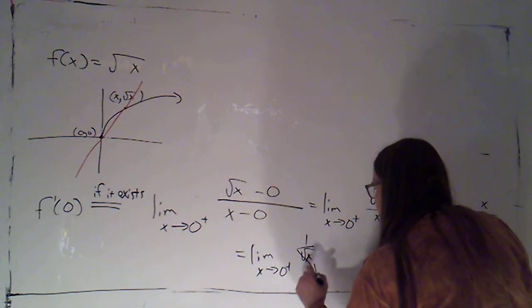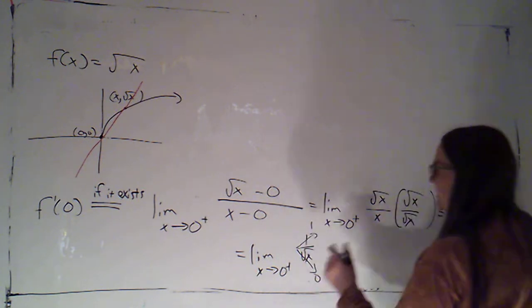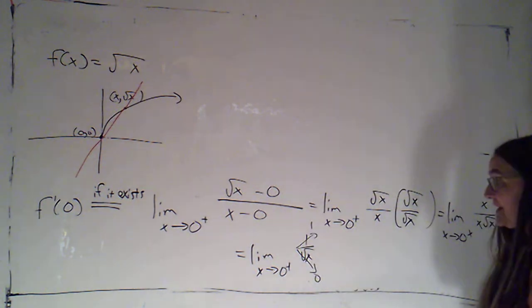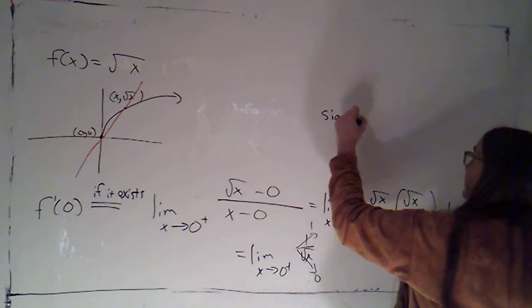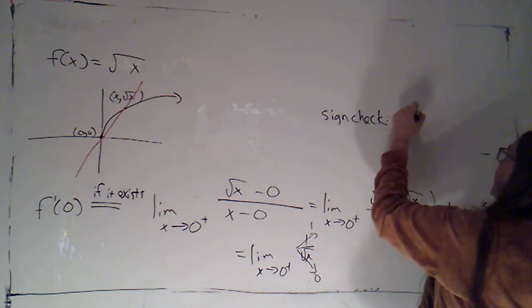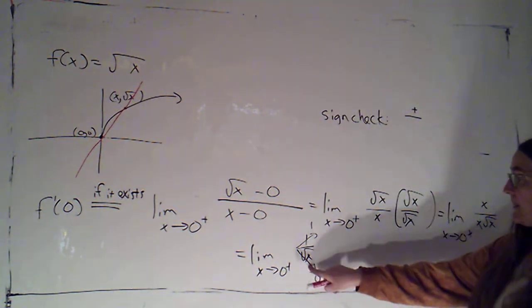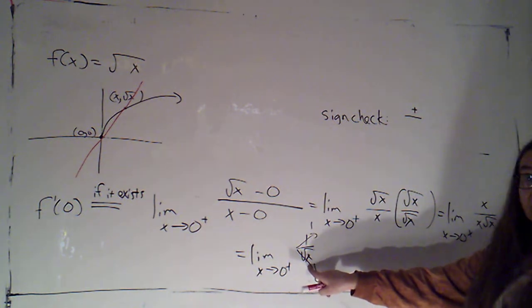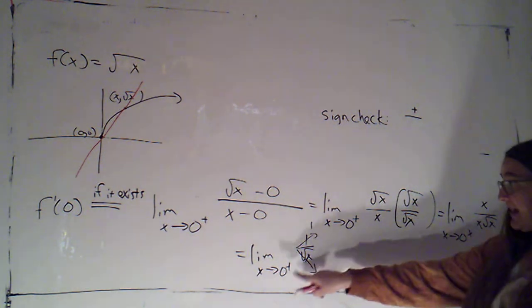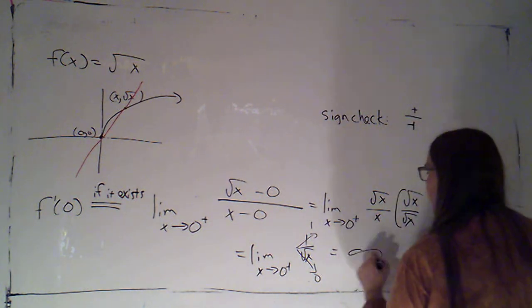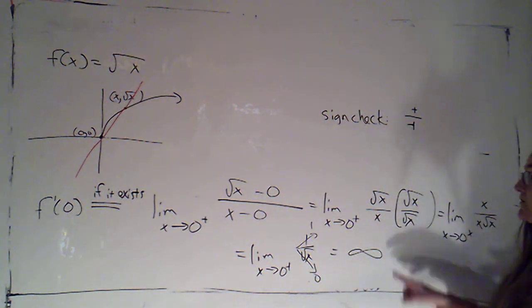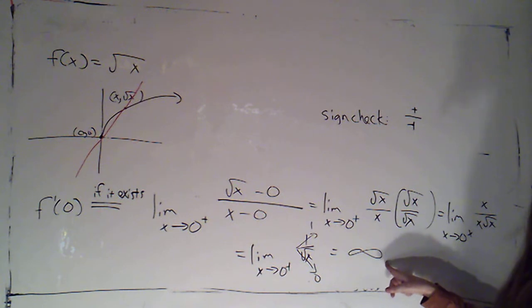If I look here, the bottom goes to zero, but the top goes to one. So, I know this thing is getting big. It's going off to plus or minus infinity and I just do my sign check. If the top is close to one, it's positive. The bottom is positive because square roots are never negative and x is representing a positive number. So, this would be positive infinity. So, that's what the limit is.